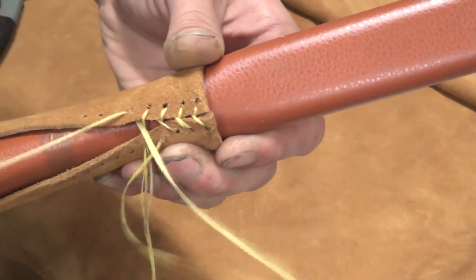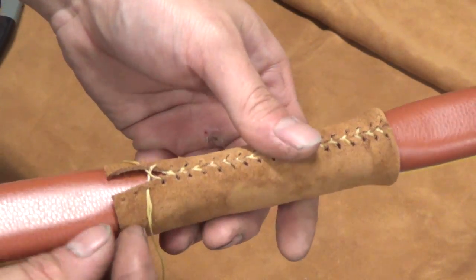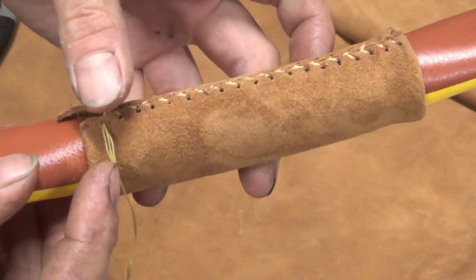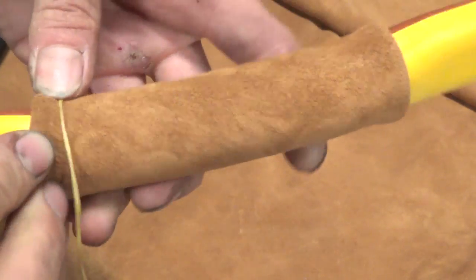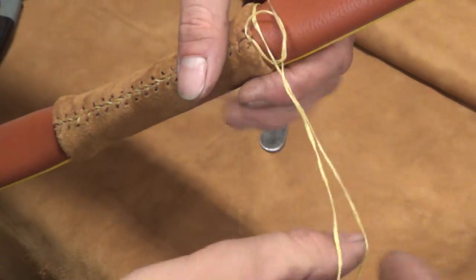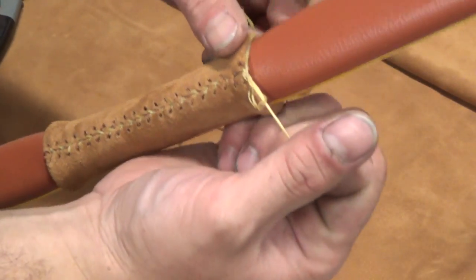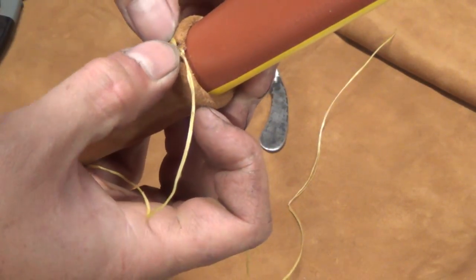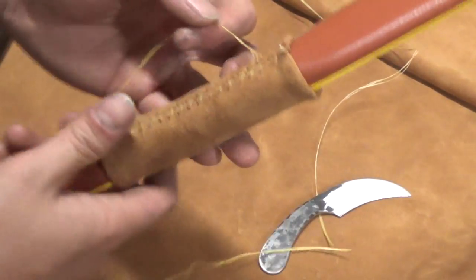I continue lacing and then fold up the last quarter inch of the handle. Once the bottom is laced and tied a couple of times to secure it, I trim off the loose edges with a knife and the handle is finished.